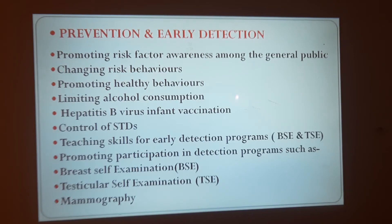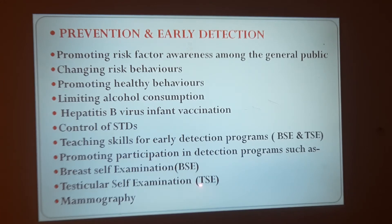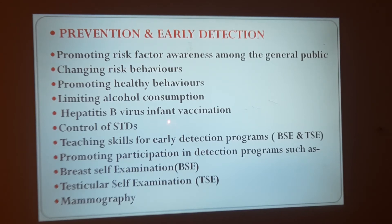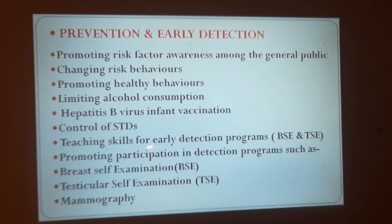At the primary level, you also focus on changing behaviors — advising those who consume alcohol or tobacco to avoid these substances. This includes promoting healthy behaviors, limiting alcohol consumption, and emphasizing vaccination. Do not skip your vaccinations — ensure they are done on time and the vaccination schedule is followed. Timely vaccination will prevent you from getting into a situation where you develop deadly diseases.